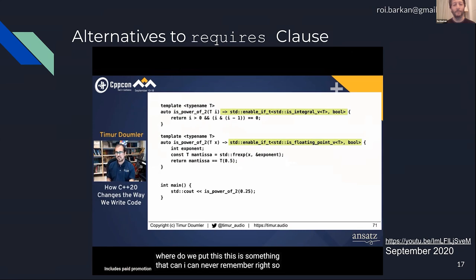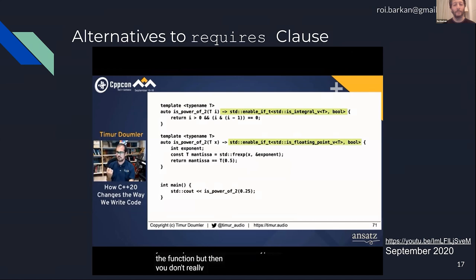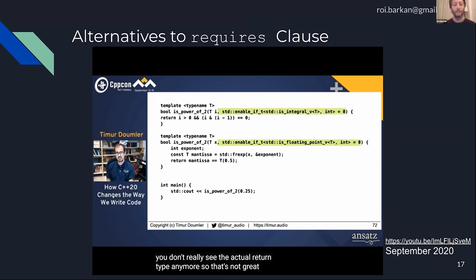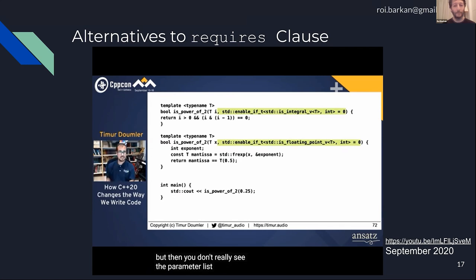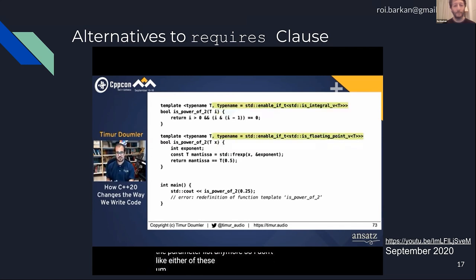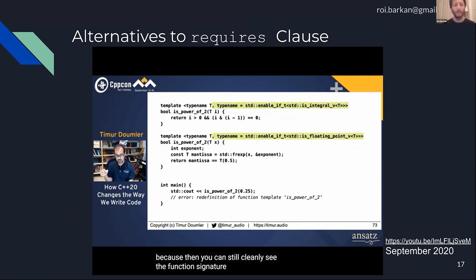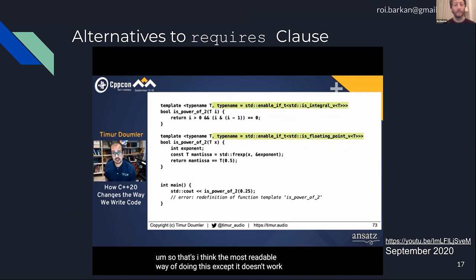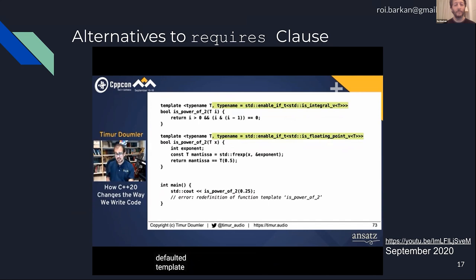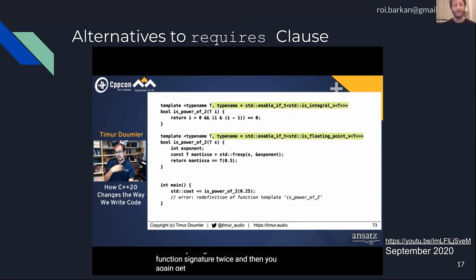Timur continues: 'You can put enable_if onto the return type, but then you don't see the actual return type anymore. You can put it into the parameter list, but then you don't see the parameter list anymore. My favorite method is to put it into the template argument list — then you can still cleanly see the function signature. Except it doesn't work, because in C++ defaulted template arguments are not part of the function signature, so you get a redefinition error.'